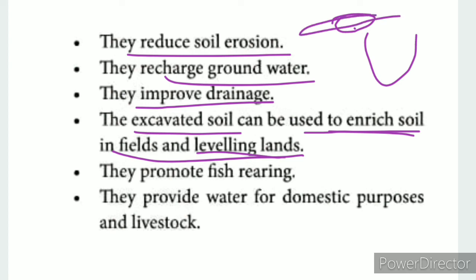Farm ponds promote aquaculture. They also provide water for domestic purposes and for livestock, making them a multi-purpose water conservation structure.